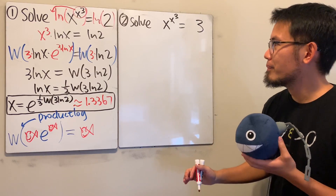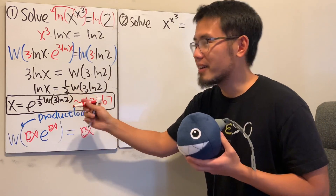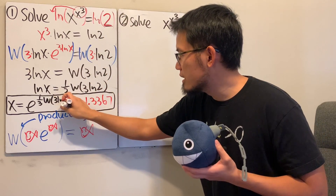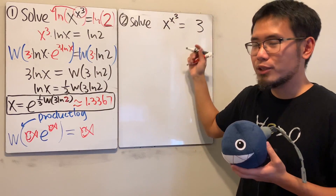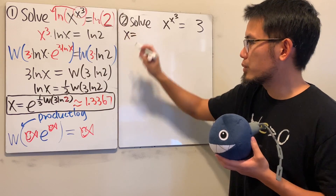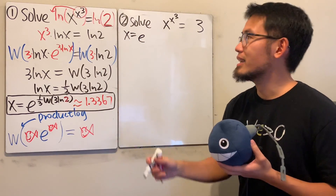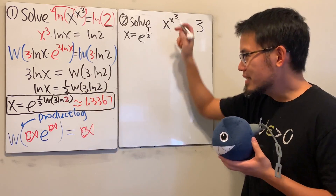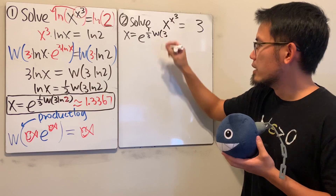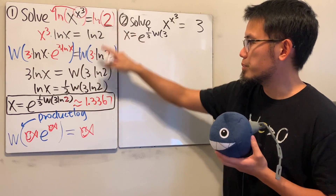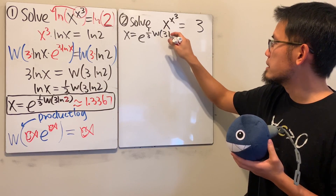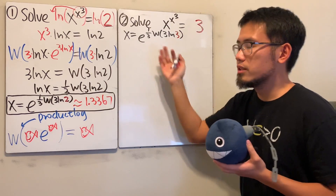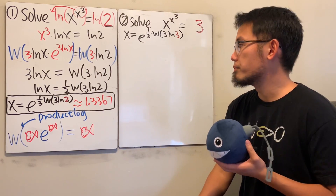Now for the second equation, what's the only thing we have to change? If you look back, the 2 is the only thing that appeared in the answer. So we can just replace 2 with 3. The left-hand side is the same, so we still have the one-third, and we get x equals e to the power of one-third times W(3 ln 3). All the other parts are the same — only the 2 becomes 3. If you want the answer within the Lambert W function, that's it.